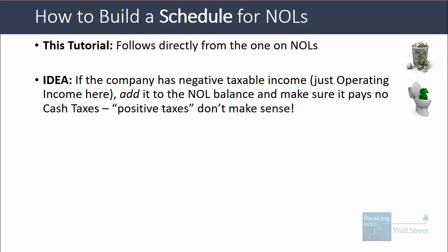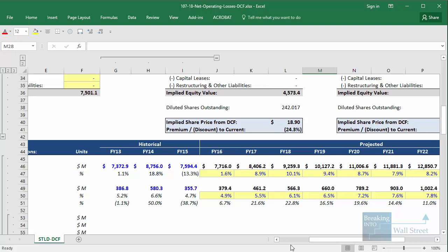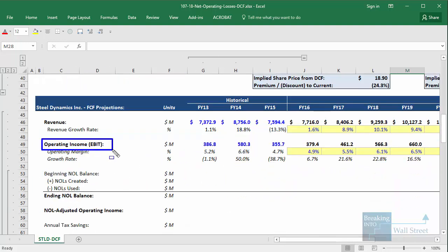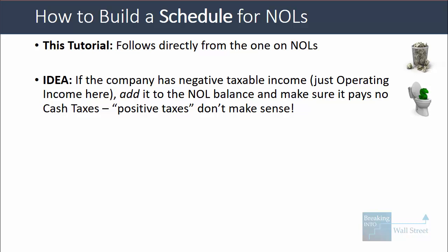The idea with net operating losses is that if a company has negative taxable income — and here, since we are building an unlevered DCF analysis, the taxable income is really just the operating income — we add that negative amount to the NOL balance and make sure it pays no cash taxes. It doesn't make sense for a company with negative 100 in operating income to end up paying negative 40 in taxes. In real life, they simply don't pay taxes, and they get a credit they can use to offset future taxes.